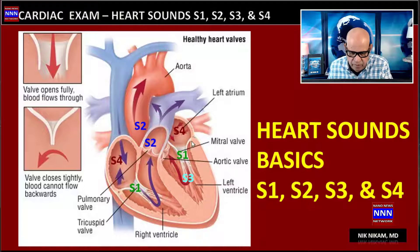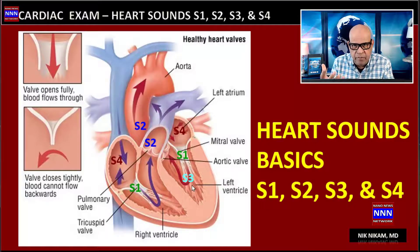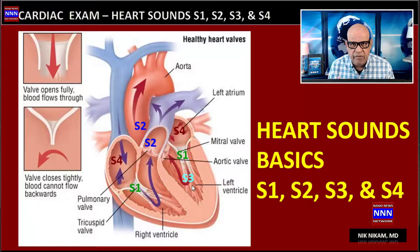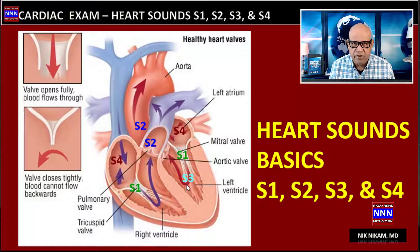S1 is produced by the closure of the tricuspid and the mitral valves. S2 is produced by the closure of the aortic and the pulmonic valves. S3 is produced during rapid ventricular filling in a failing heart with an elevated left ventricular end-diastolic pressure. S4 is produced predominantly by the atrial contraction against an elevated left ventricular end-diastolic pressure.